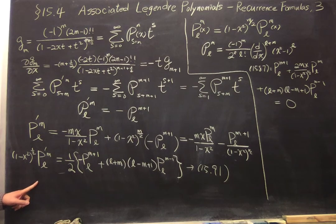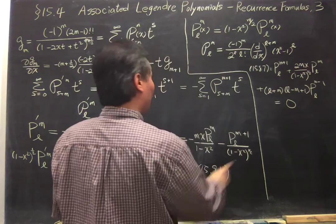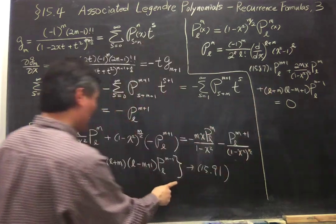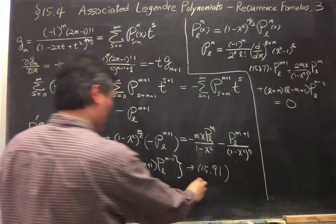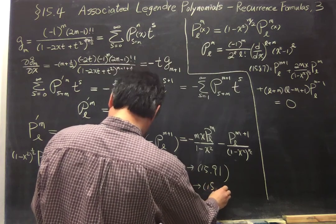Okay, this is 15.91. If you combine this again, using this equation again substituting into here, so you will get, furthermore, you will get 15.92.